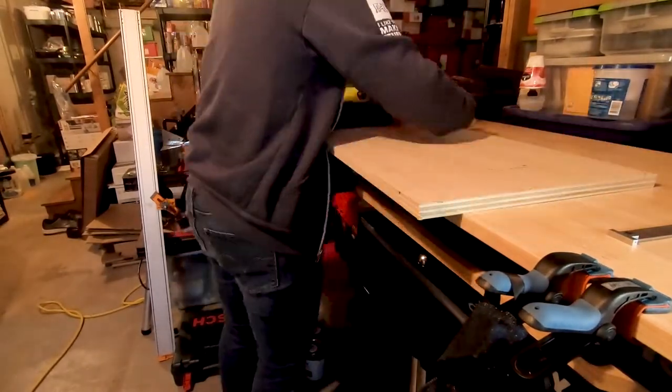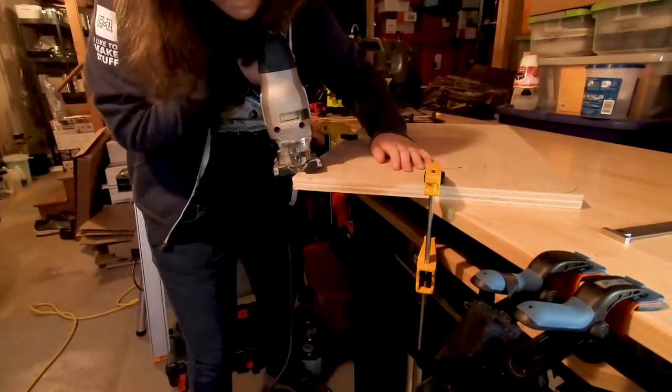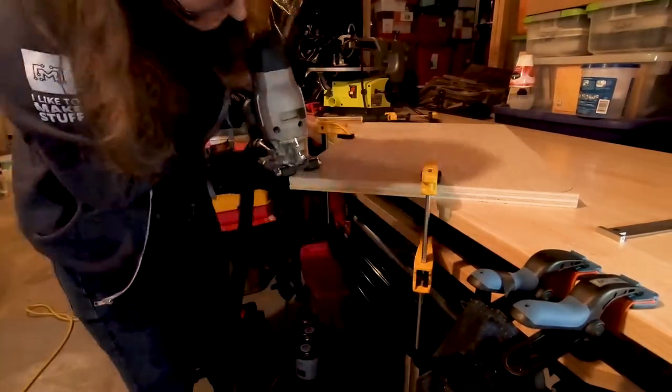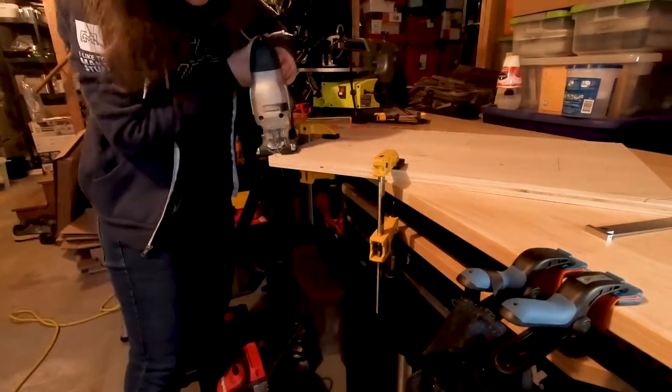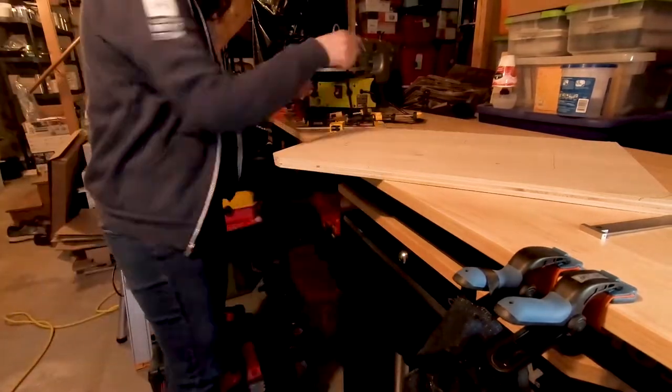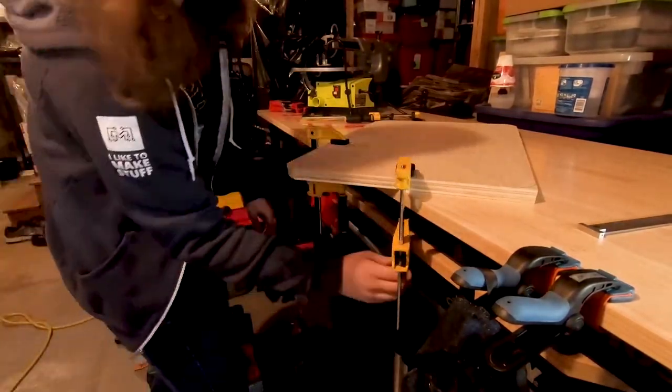And then I 3D printed these jigs to cut rounded corners, just traced it onto the wood, and then again used the jigsaw to cut the corners. Now they look a little rough, and that's okay. You can clean up really easily with sanding, and that's what I did a little bit. But I've been really into practical 3D prints lately for woodworking. There's a lot of cool designs out there.